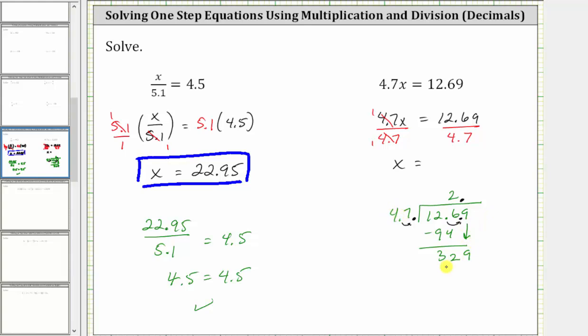And now determine how many 47s in 329. Let's try seven. Seven times seven is 49. Record the nine. Perform an exchange with the four. Seven times four is 28 plus four is 32. Subtracting. Notice how there are exactly seven 47s in 329, because this difference is zero. And therefore the quotient is 2.7.